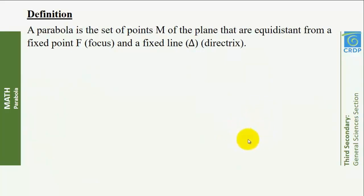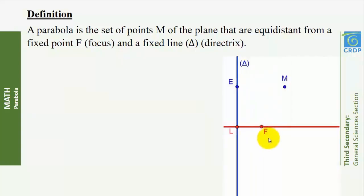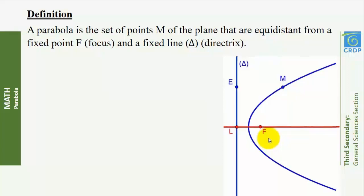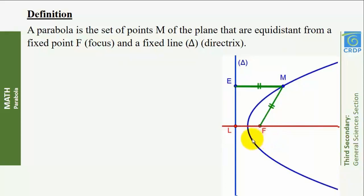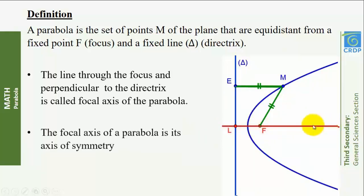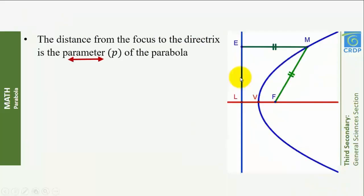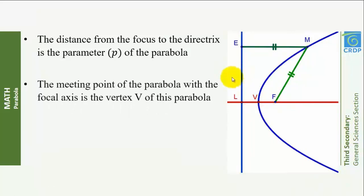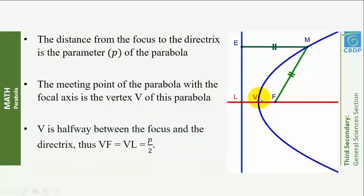Let's move to the text of the chapter. We start with the definition of a parabola. A parabola is a set of points M of the plane that are equidistant from a fixed point F called the focus and a fixed line delta called the directrix. The line through the focus and perpendicular to the directrix is called the focal axis. The focal axis is the axis of symmetry of the parabola.